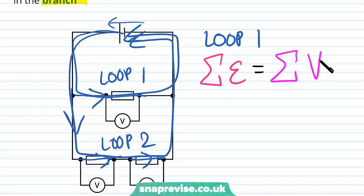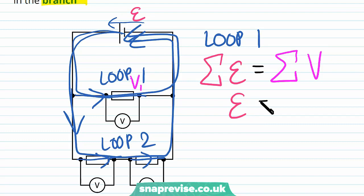In the second loop with multiple components, the charge carrier's energy is split between the two, but the total energy transferred to both components still equals the energy originally obtained from the cell. Writing this down: the sum of the EMFs in loop one equals the sum of the potential differences of the components in loop one. In loop one, the EMF from the cell E equals V1 — all the energy the charge carrier obtains from the cell goes to that one component.